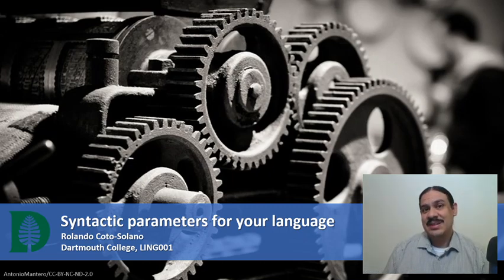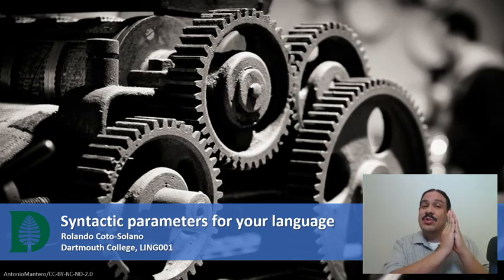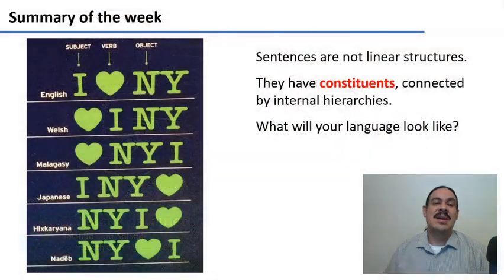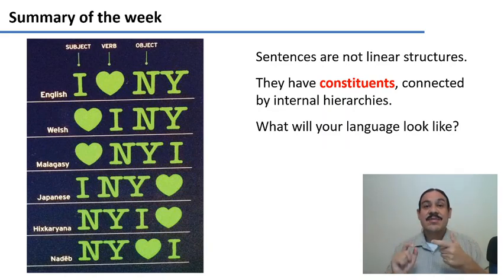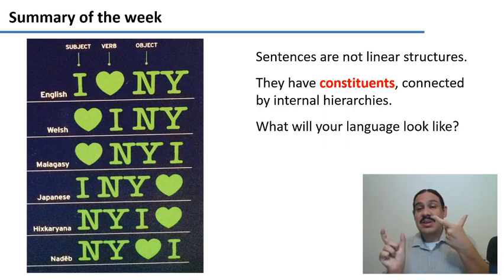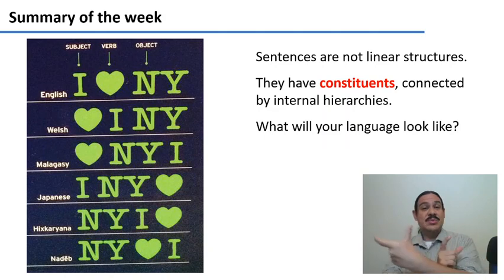After all of the syntax we have studied this week, you might be wondering what do you need out of all of this to make a language that works. In this video, we'll review the few settings that you need to adjust to decide on the basic ordering of the words of your language. The main idea of the week is that sentences aren't just strings of words — sentences have constituents like noun phrases and verb phrases, and there is a certain hierarchy connecting these constituents. This hierarchy is there to provide a structure of meaning for the whole sentence. What you need to decide is what the order of the constituents is going to be in your language.